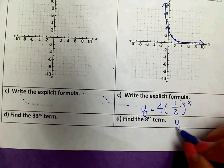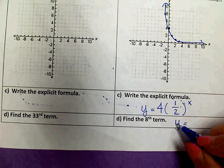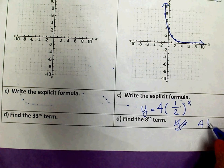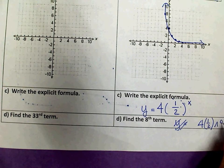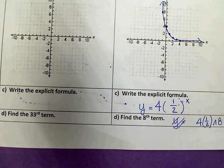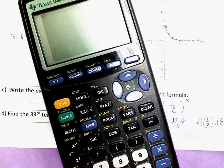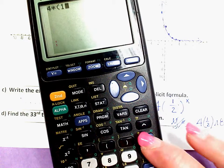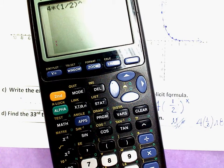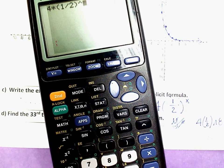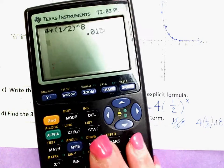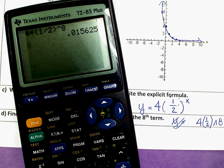I'm just going to type into my calculator, probably not y equal. I'm going to type in 4 times 1 half raised to the 8th power. So 4 times 1 half raised to the 8th power makes a pretty ugly decimal. I'm going to turn that back into a fraction.